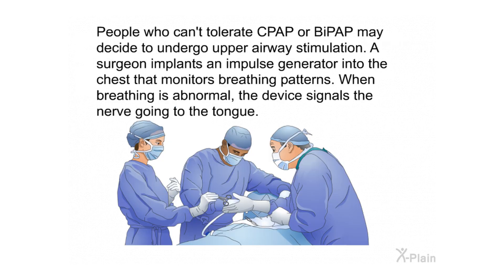People who can't tolerate CPAP or BiPAP may decide to undergo upper airway stimulation. A surgeon implants an impulse generator into the chest that monitors breathing patterns. When breathing is abnormal, the device signals the nerve going to the tongue.